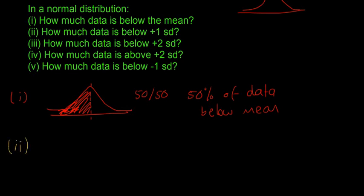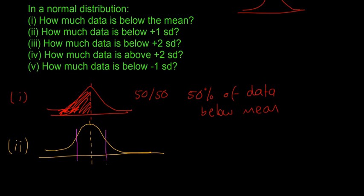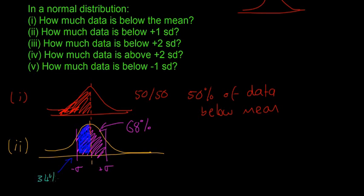So part two: how much data is below one standard deviation? Let's draw our bell curve with a line at the bottom and a dotted line for the mean. I'm going to add in two lines for plus 1 standard deviation and minus 1 standard deviation. We know that between plus and minus 1 standard deviation there is 68% of the data. Because this is symmetrical about the centre point, each half is 34%.